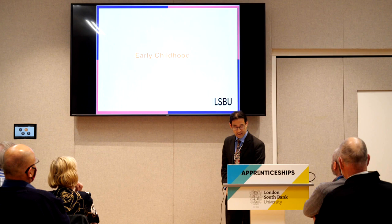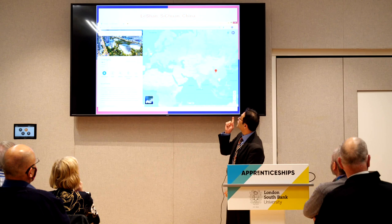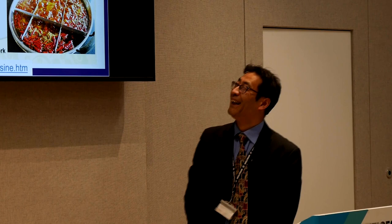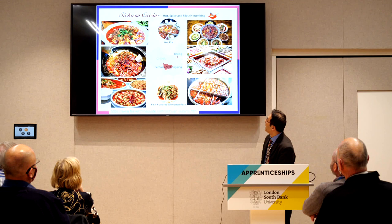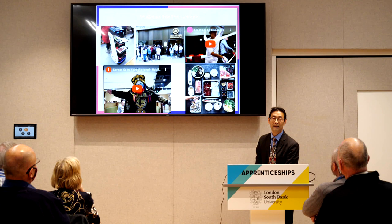I'll start with my early childhood to show a bit of my journey. I was born in Changchun in the northeast of China, but I grew up in Sichuan, in Le Shan. It's about 6,000 miles away from London. Sichuan is very famous for its hot, spicy, and mouth-numbing dishes — they use red dried chilies. If you want to experience Sichuan cuisine, there are Haidilao restaurants in London, one in Piccadilly Circus and one at the O2.